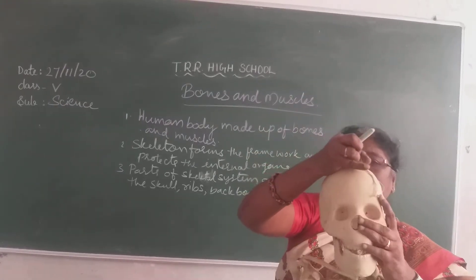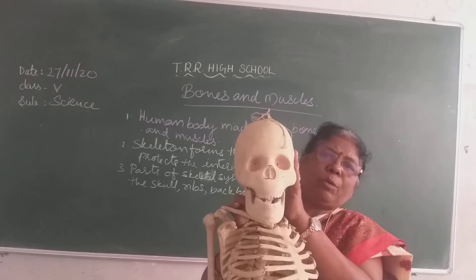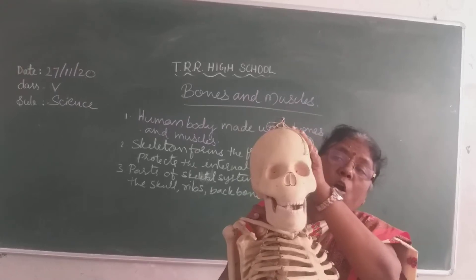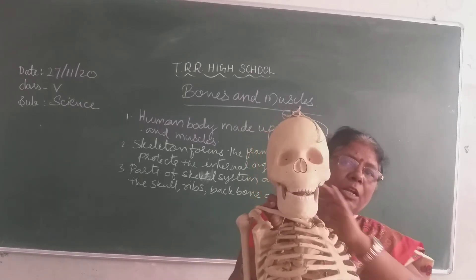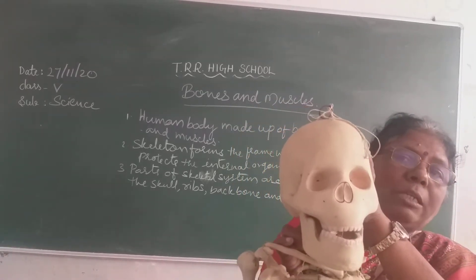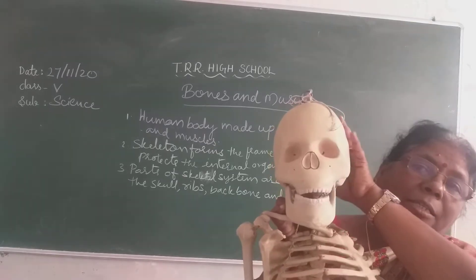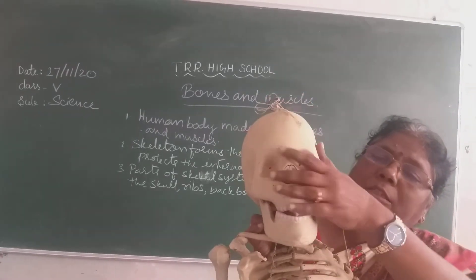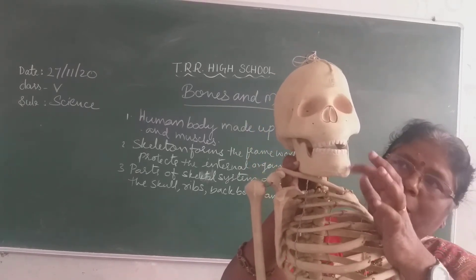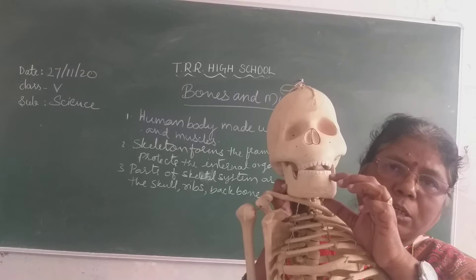Now here you will see each part of the skeletal system. You are seeing this skull — how many bones are there in the skull? 22 bones. Here you are seeing all the joints are fixed. Which part does it protect? The brain — it protects the delicate organ, that is the brain. You are seeing the eyes and jaws in the skull. All these are fixed joints, except the lower jaw which is movable. Upper jaw, lower jaw — only the lower jaw is movable, which is used for speaking.